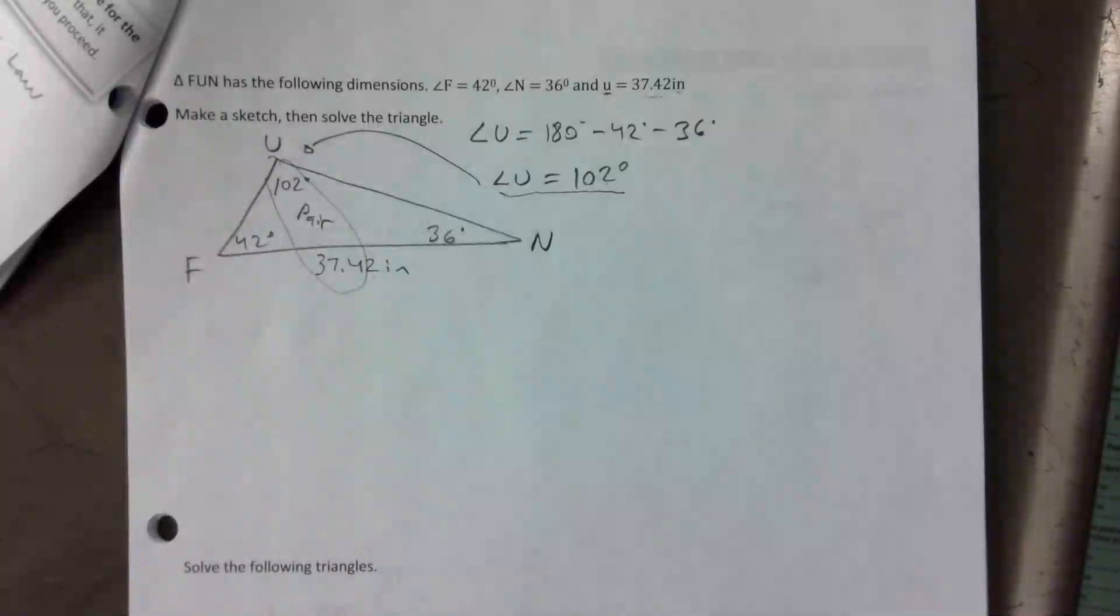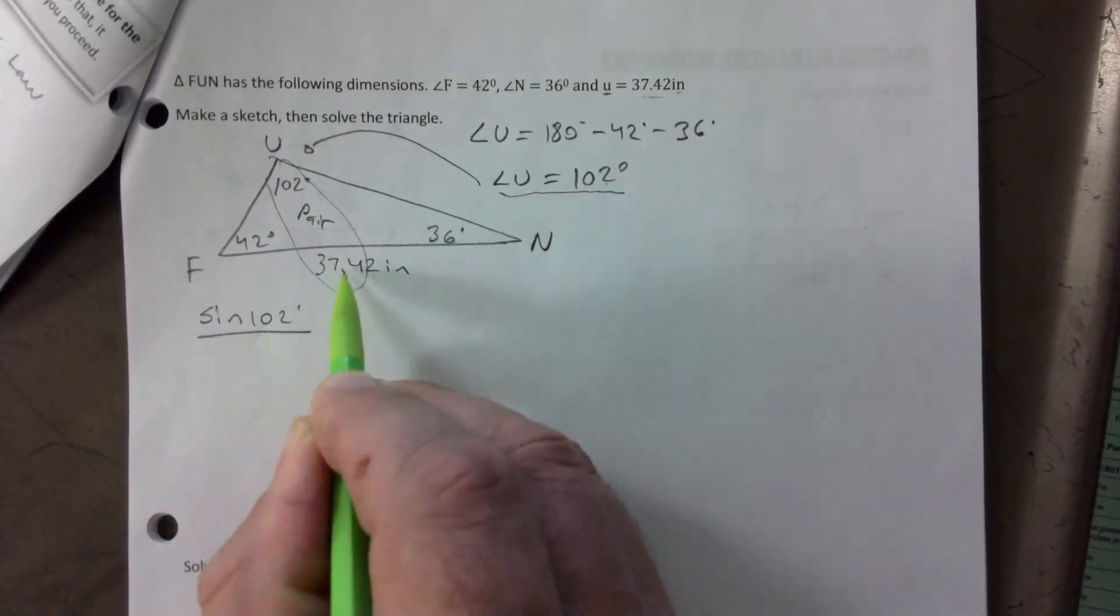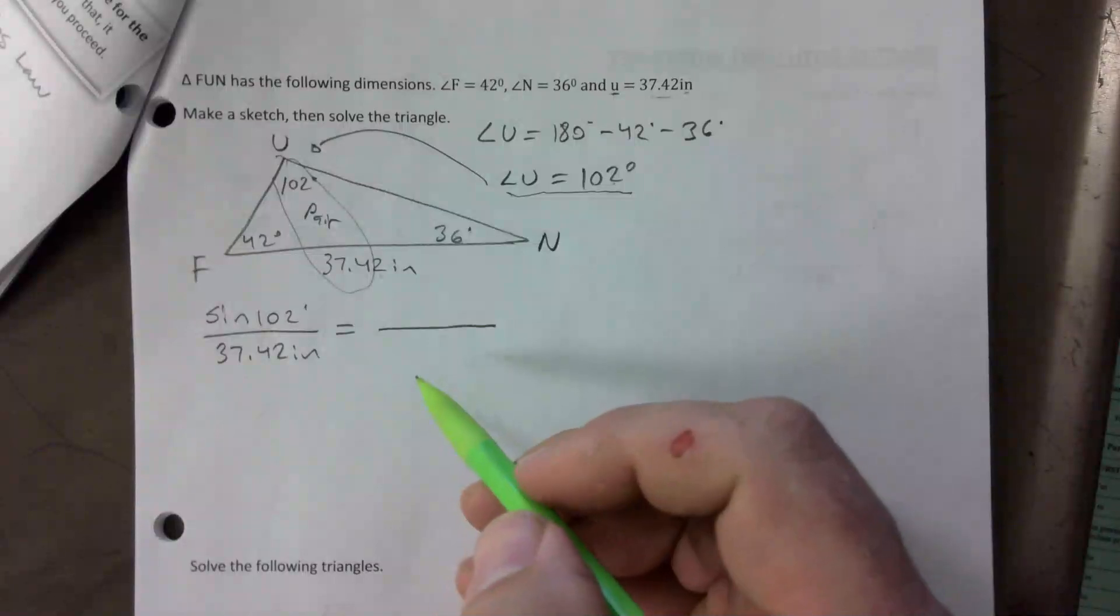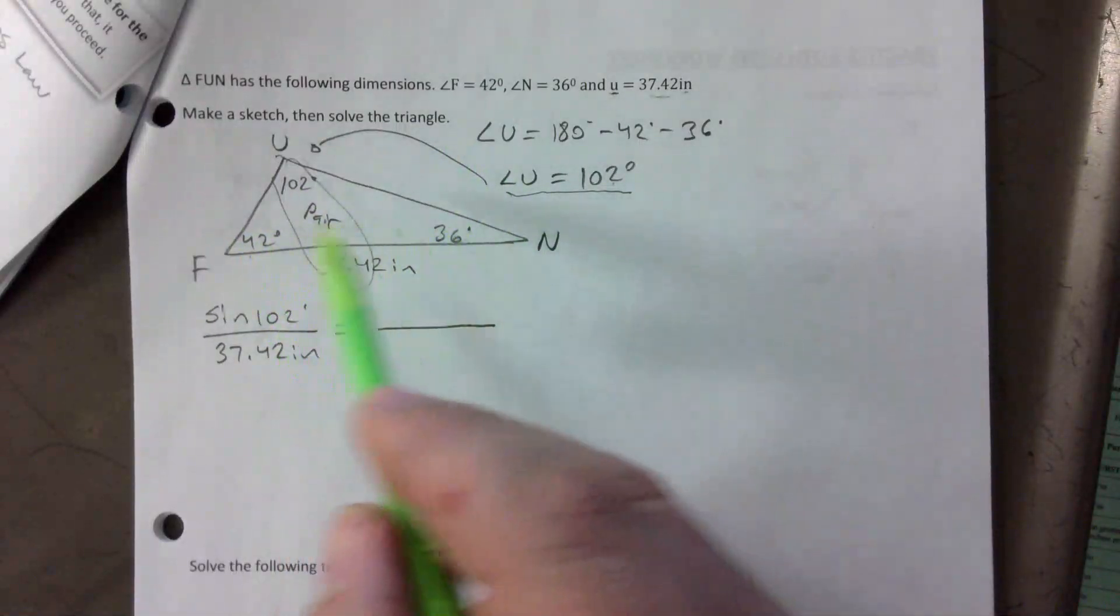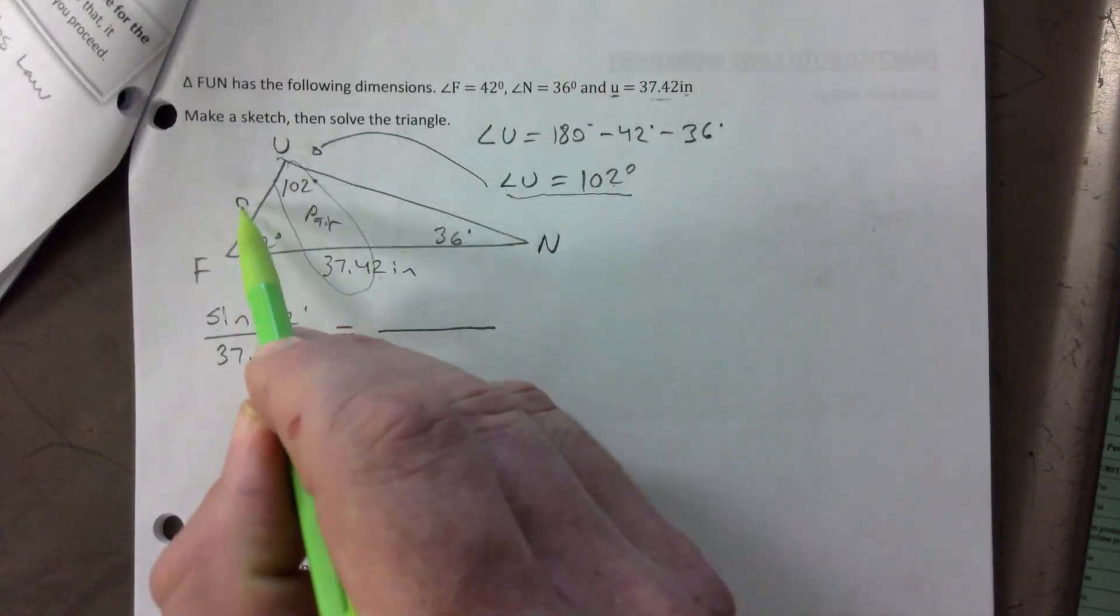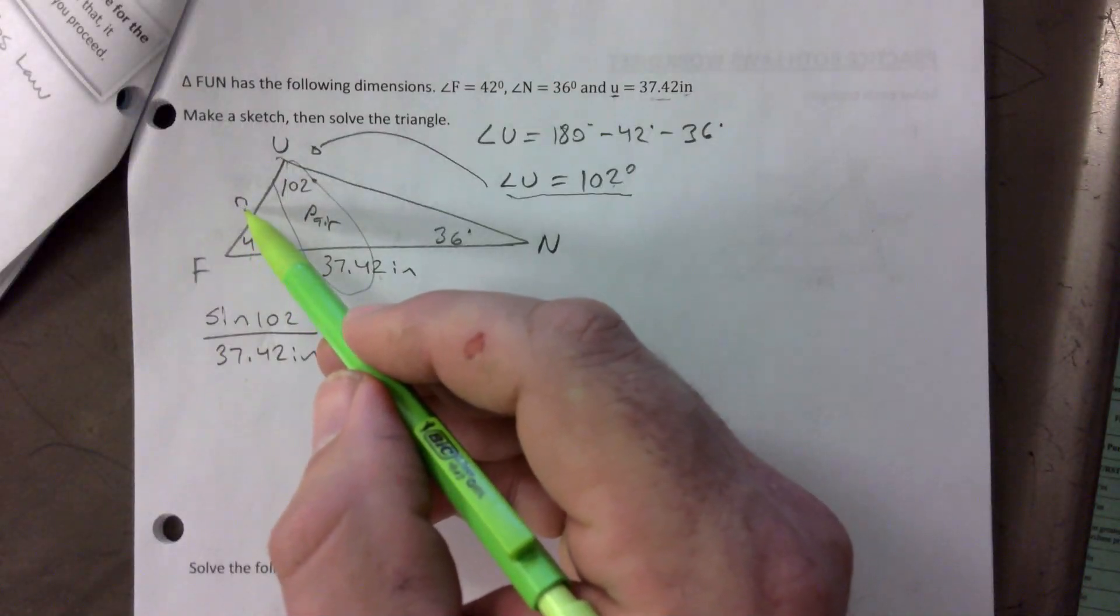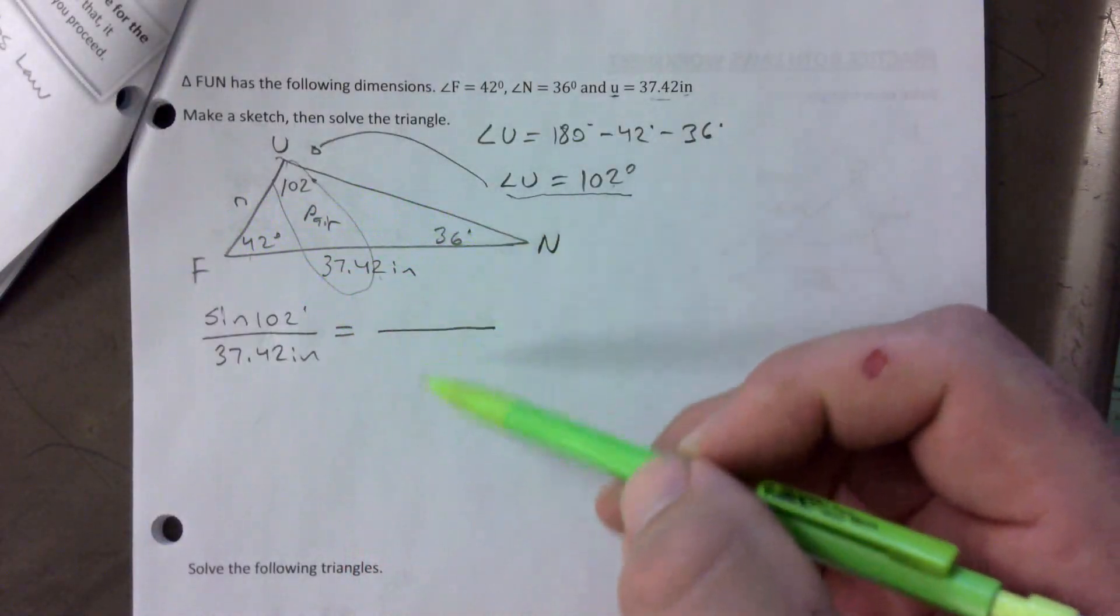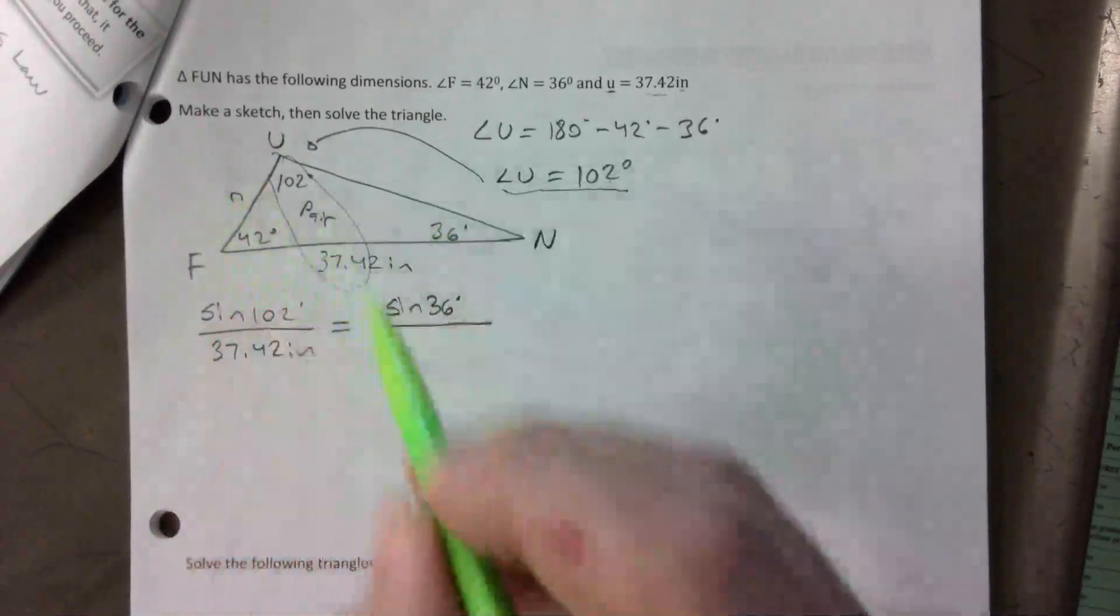And so you're able to start it off with sine law. So sine of 102 over 37.42 inches. And it says solve the triangle, so it doesn't matter which of these two you pick, but just be careful that if I ask you for side N. If I were to ask you for side FU or N, it's better you would have to use sine of 36, right? That's what you would put here. So I'm just going to go with sine of 36 in this case which solves for N.